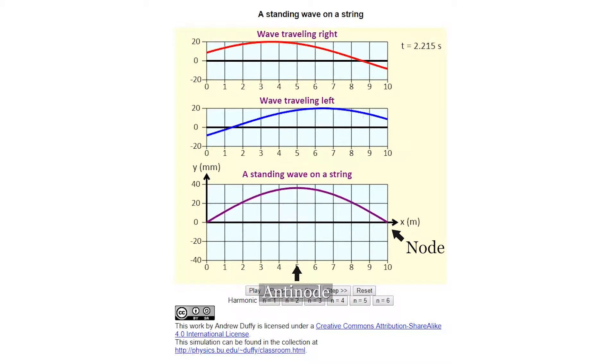A standing wave is the addition of a wave and its reflection, two identical waves traveling in opposite directions. A standing wave appears to be fixed in its location, because the nodes and antinodes don't move.